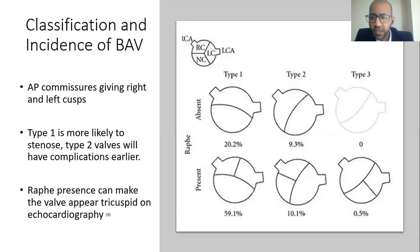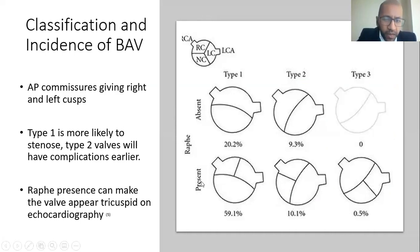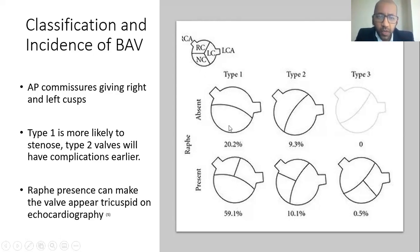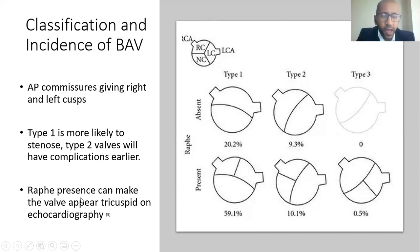For classification: a type 1 bicuspid aortic valve has an AP commissure dividing into left and right cusps, while in type 2 there is fusion of the left coronary and non-coronary cusps. Type 1 has higher chances of aortic stenosis, while type 2 develops complications earlier. Sometimes a ridge or raphe can be present, which may deceive on transthoracic echo, making the valve look tri-leaflet.